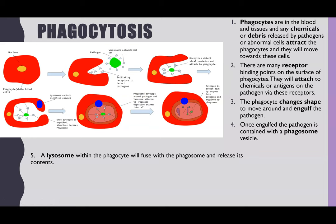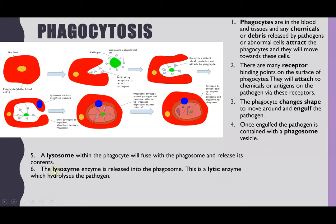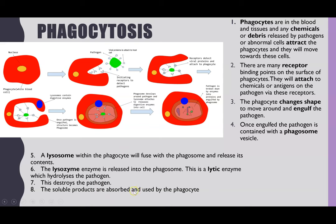The next step: a lysosome, which is a vesicle within the phagocyte, will fuse with the phagosome. When it does fuse, it releases its contents. The lysosomes contain an enzyme called lysozyme, and that lysozyme is released into the phagosome. Lysozyme is a lytic enzyme, meaning it has the ability to hydrolyze and destroy pathogens. As a result, the pathogen which has been engulfed within that phagosome gets destroyed. When it is broken down, the soluble products can be absorbed and recycled by the phagocyte. The antigen is then placed on the cell surface membrane, and the phagocyte becomes an antigen-presenting cell. There'll be more on that in the next video.